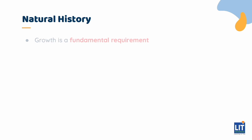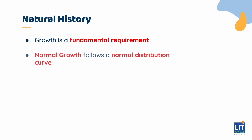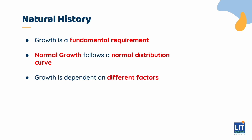Every child is expected to grow physically taller with age until they reach adulthood. Normal growth follows a normal distribution curve, which therefore gives us an accepted range of heights that would be considered normal for the population. Growth is a dynamic process that is dependent on many different factors that will be discussed later.